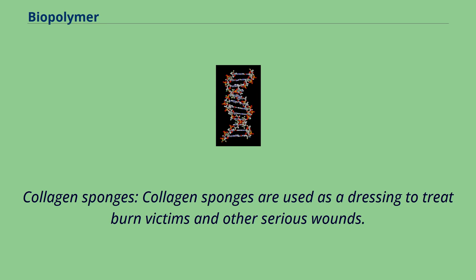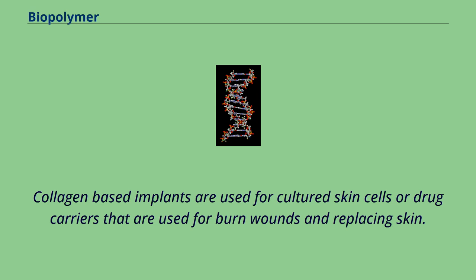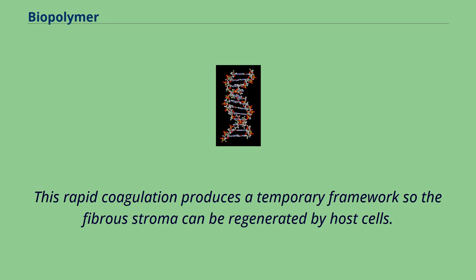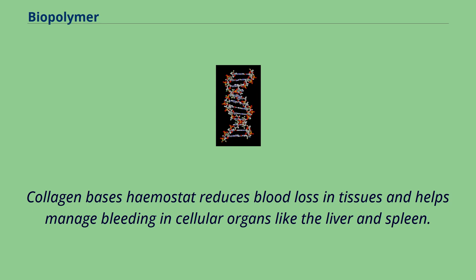Collagen sponges are used as a dressing to treat burn victims and other serious wounds. Collagen-based implants are used for cultured skin cells or drug carriers that are used for burn wounds and replacing skin. Collagen as a hemostat: when collagen interacts with platelets it causes rapid coagulation of blood. This rapid coagulation produces a temporary framework so the fibrous stroma can be regenerated by host cells. Collagen-based hemostat reduces blood loss in tissues and helps manage bleeding in cellular organs like the liver and spleen.